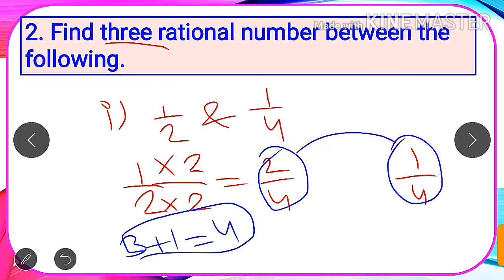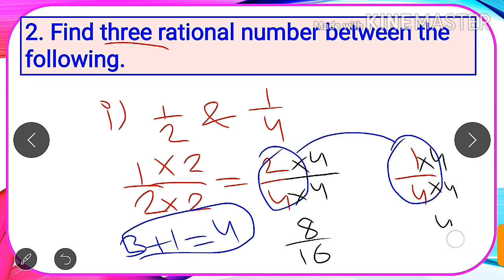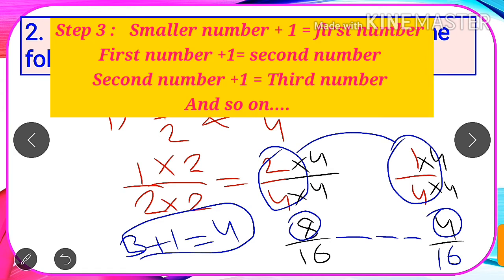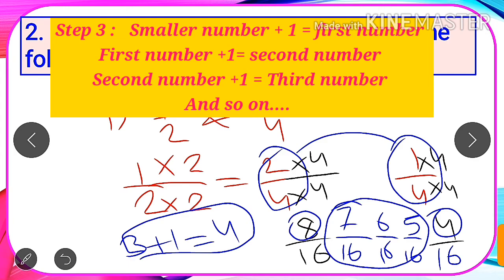After computing three plus one equals four, we multiply this four in both numerator and denominator of both given fractions. So 2 by 4 multiplied by 4 over 4 gives 8 by 16, and 1 by 4 multiplied by 4 over 4 gives 4 by 16. Since 4 is smaller than 8, we add 1 to the numerator successively: 4 plus 1 gives 5 by 16, then 6 by 16, then 7 by 16. These are our three rational numbers.